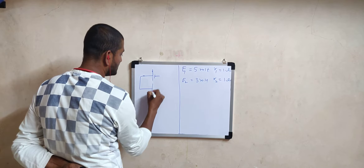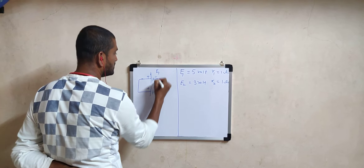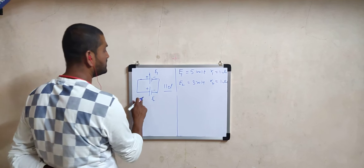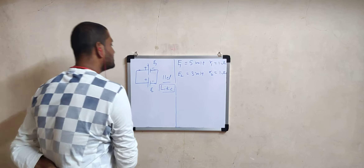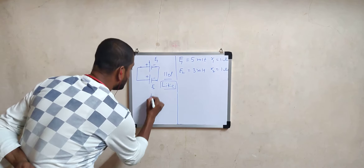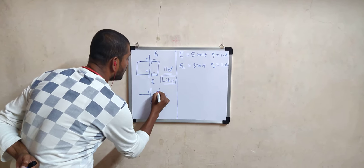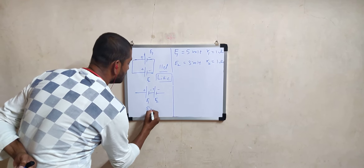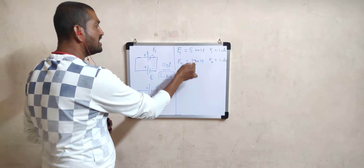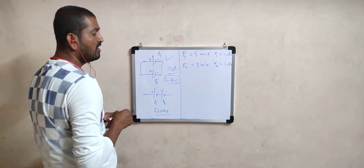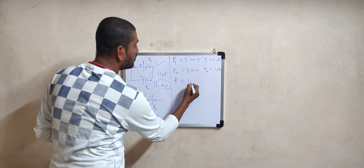In parallel combination, like terminals are connected together — positive of the first cell is connected to positive of the second, and minus to minus. This is called parallel combination of cells. Remember: like terminals together. In series combination, unlike terminals are together — the negative of the first is connected to the positive of the second. For this numerical, the cells are given in parallel combination, and this combination is used to pass current through an external resistance R equal to 10 ohms.